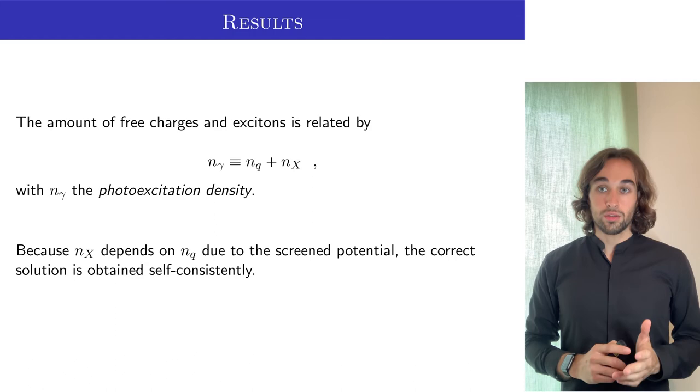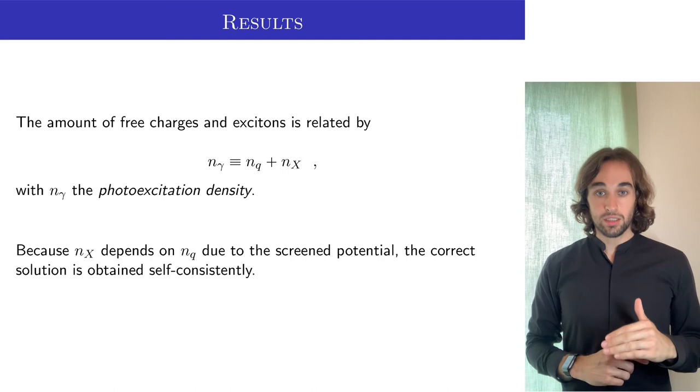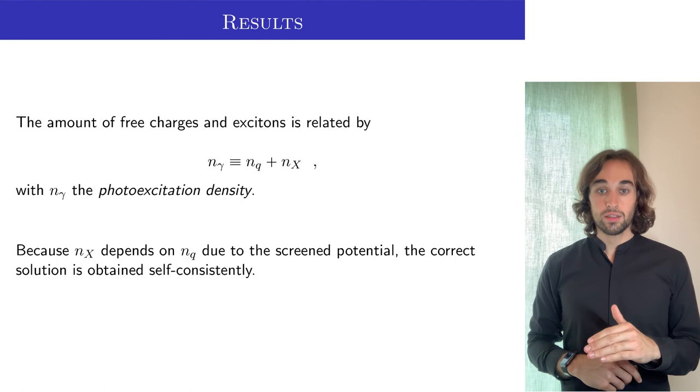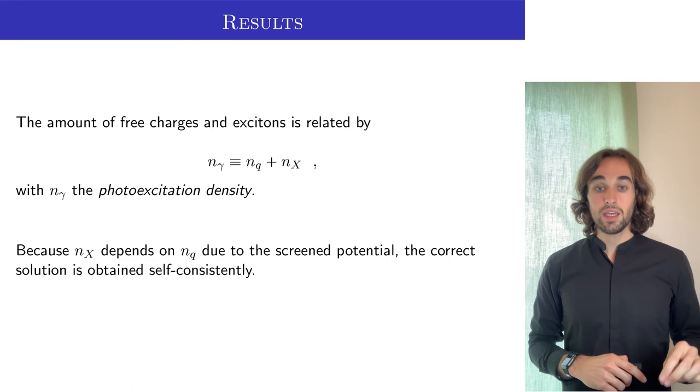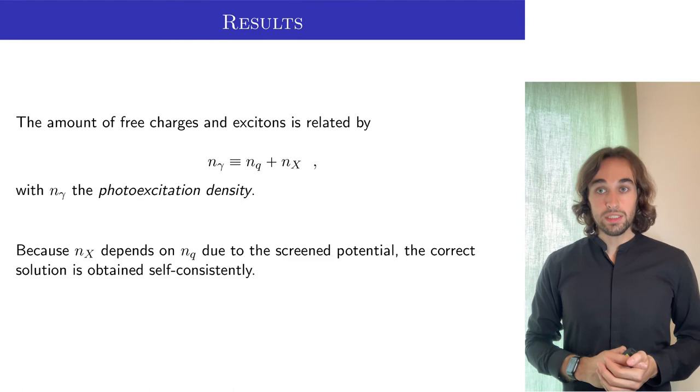Now, because we don't know how many excitons we get by specifying the density of free charges, we must iteratively solve, in a self-consistent way, this equation. So, we fix the density of free charges, which sets the binding energy, which sets the density of excitons, and we add these two densities and compare it to the photoexcitation density. If it is not the same, then we slightly change the density of free charges, and we repeat the process all over again until we find the correct solution.